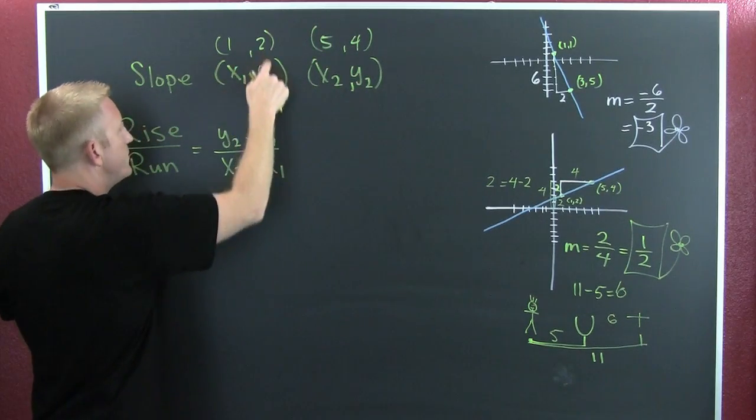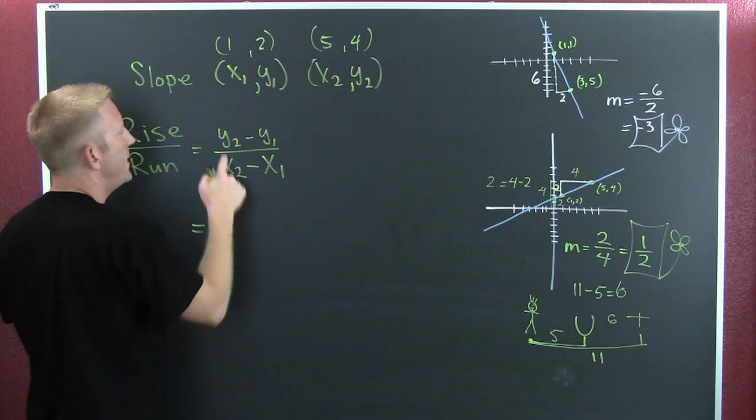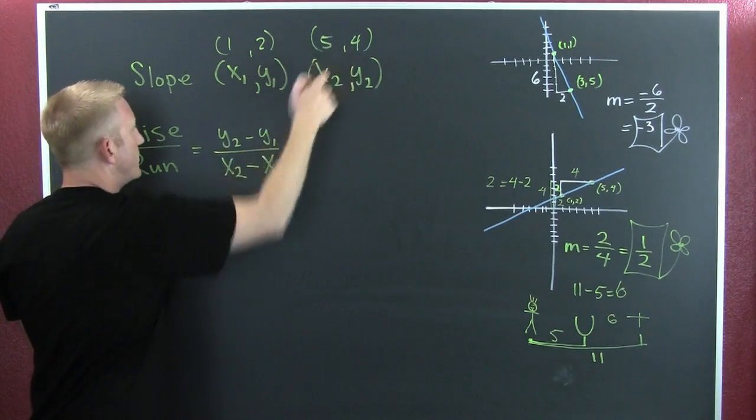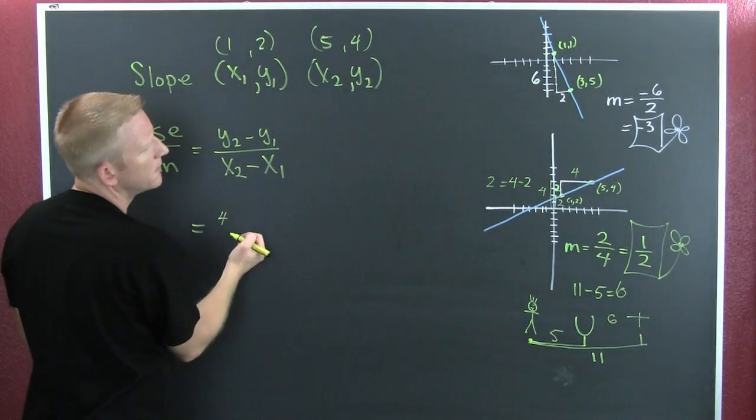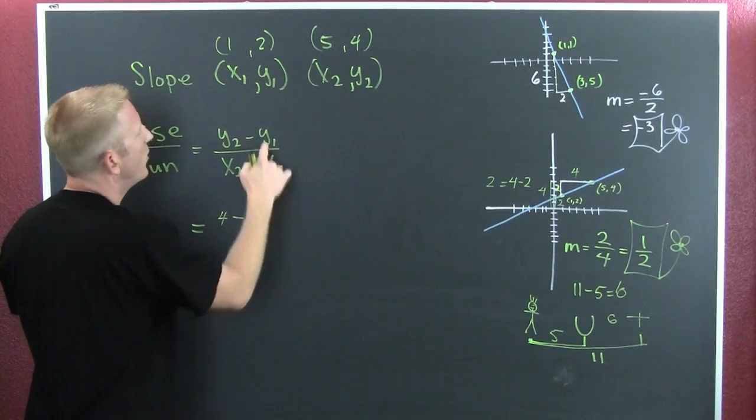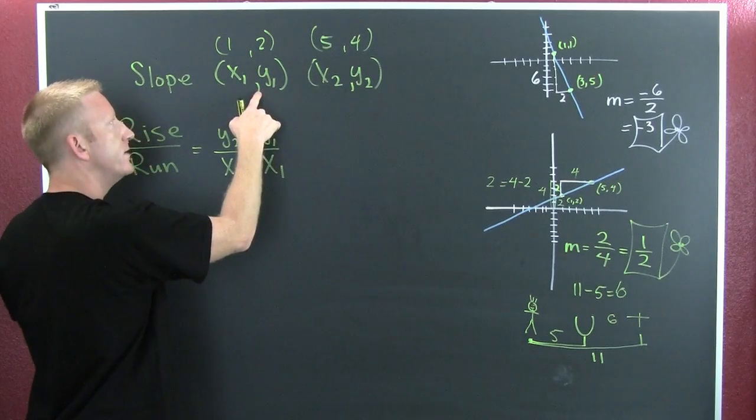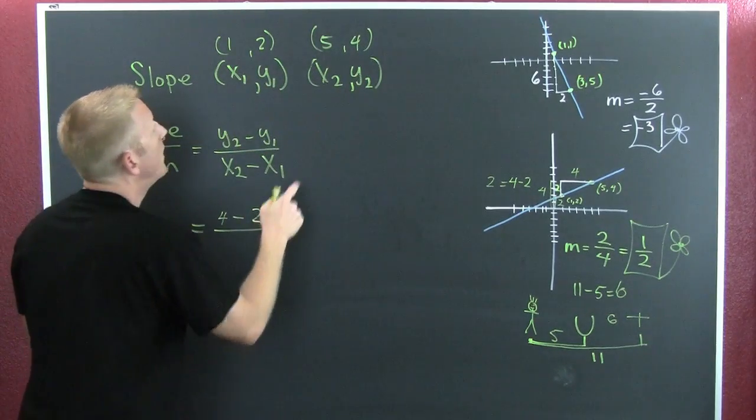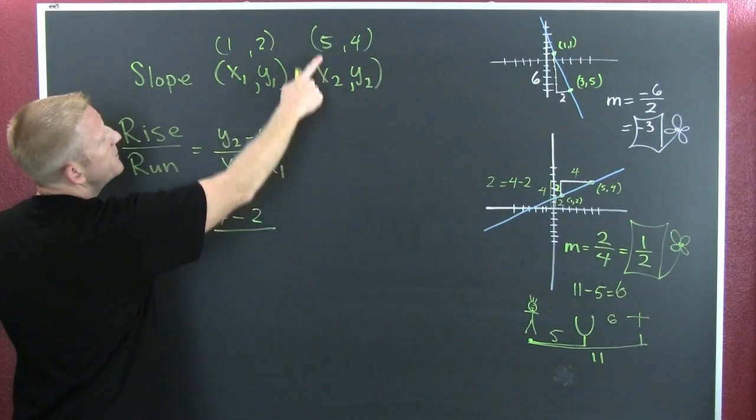Until you're a professional, I strongly encourage you label them. This would be your x2, this would be your y2, this will be your x1, this will be your y1. So then y2, where's that? That's here. What's that? That's 4. Sure. And then minus y1, where's that? That's there. What's it? It's 2.